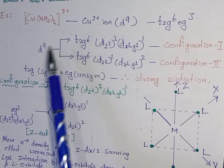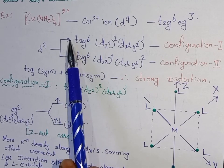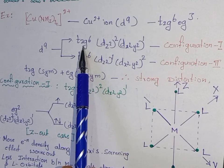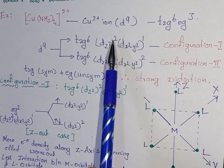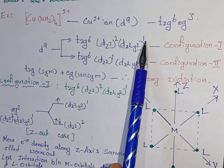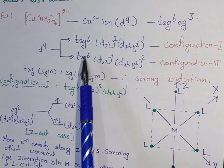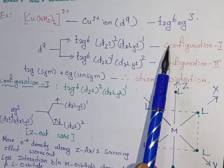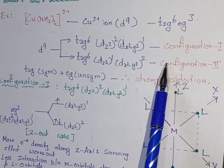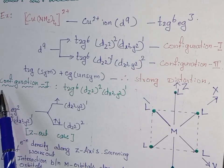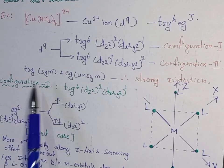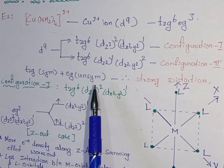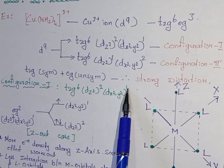For the D9 system, in its degenerate state, it has two possibilities of electron configuration. Configuration 1 is T2G6, dz²², dx²-y²¹. Configuration 2 is T2G6, dz²¹, dx²-y²². In configuration 1, the T2G6 is symmetrical and the EG set is unsymmetrical, that is dz²² and dx²-y²¹.